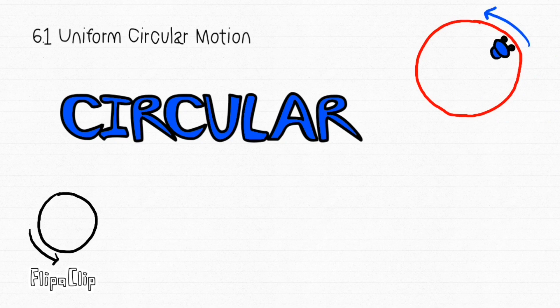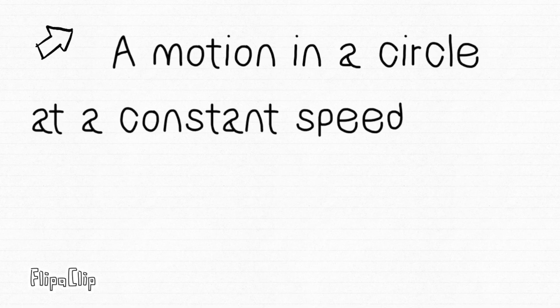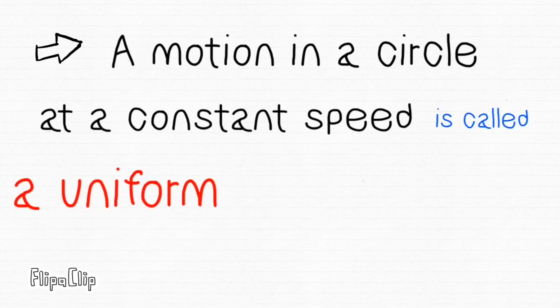Today's topic is circular motion. Hi, this is John. John has a string with a ball attached at the end, moving in a circle. Motion in a circle at a constant speed is called uniform circular motion.